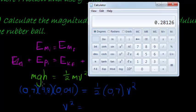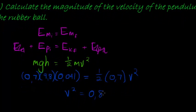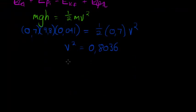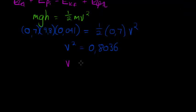Solving for velocity squared: on the left hand side we have 0.7 times 9.8 times 0.041. We then divide both sides by 0.5 and by 0.7, giving us velocity squared equals 0.8036. Taking the square root, we get velocity equals plus or minus 0.9 meters per second.